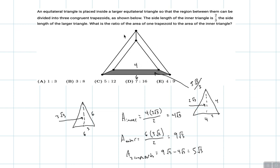And what we're trying to find is the ratio of one trapezoid, the area of one trapezoid, to the area of the inner triangle. So that's just going to be five root three over three over four root three. So this will simplify to five over twelve. So the answer, therefore, is choice C.